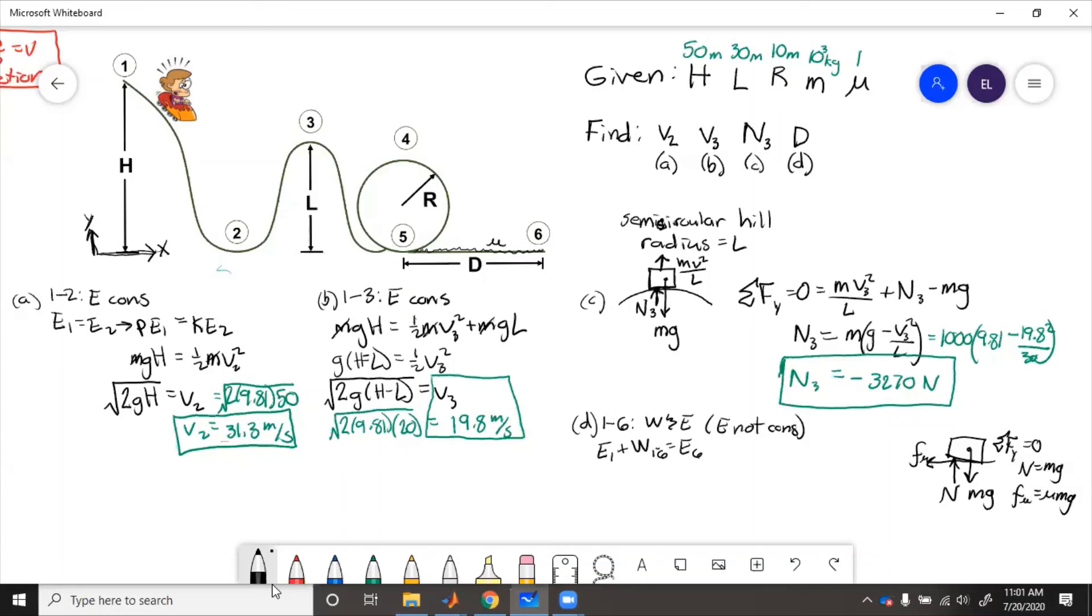So this is going to be, so at one, we have potential energy, potential energy at one. And then we have minus work by friction. And then what is the energy at state six? Well, does it have potential? It's on the ground, so potential energy is zero. Does it have kinetic? Well, it's stopped, so kinetic energy is also zero.